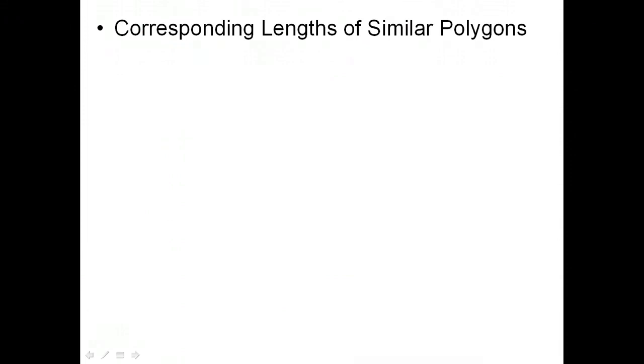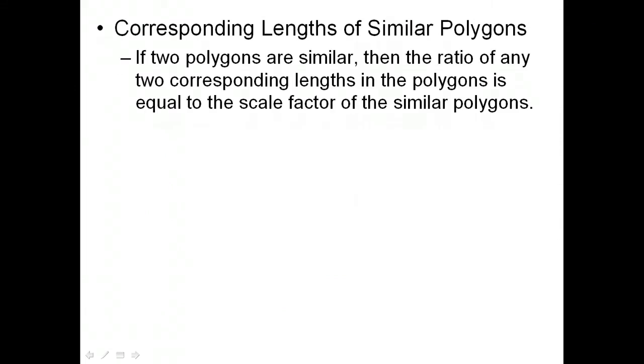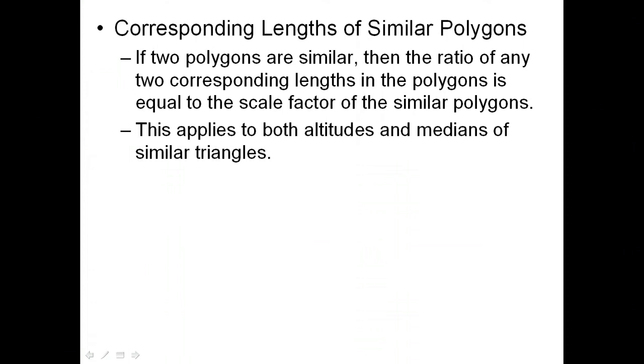The corresponding lengths of similar polygons. What we are really saying when we say that perimeter is true, we are saying that if we have the ratio of two corresponding lengths in the polygon is equal to the scale factor no matter what those lengths are. It could be the perimeter. It could be the altitude of a triangle or the median of a triangle. The altitude of a triangle is a line segment that goes to a vertex to the opposite side so that it is perpendicular. It actually gives us the distance from the vertex to the opposite side. The median goes from the vertex to the midpoint of the opposite side.